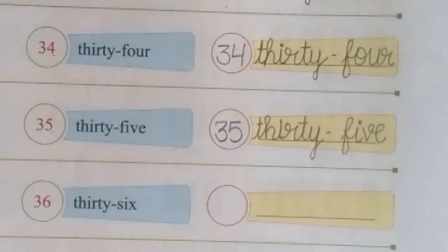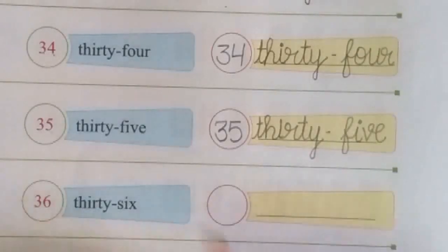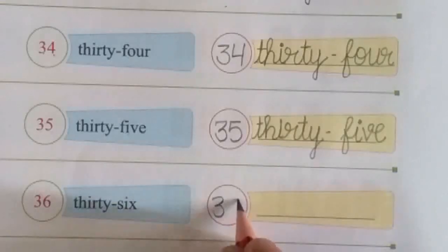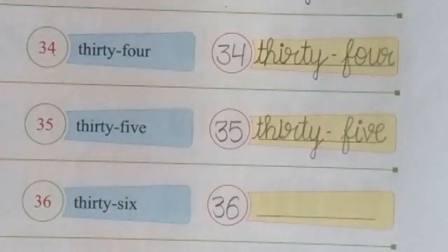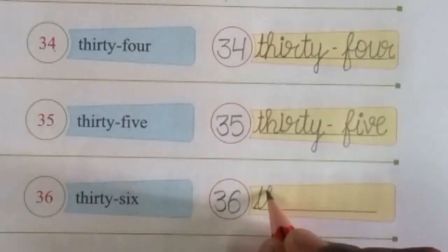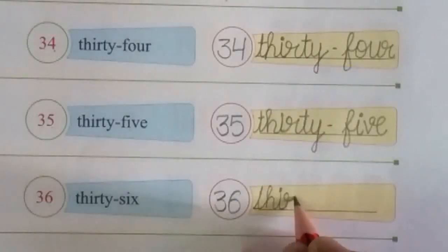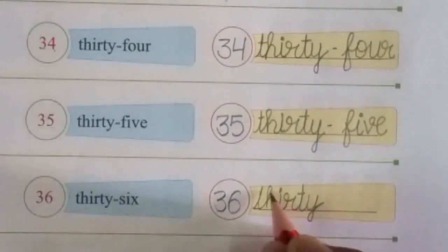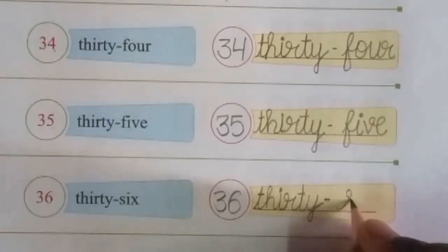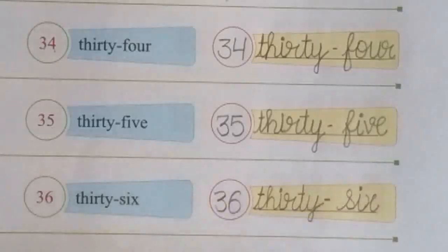Next, after 35 comes 36. Write 36. T-H-I-R-T-Y, 30, dash, S-I-X, 6. Thirty-six.